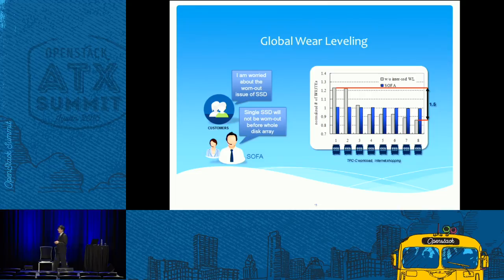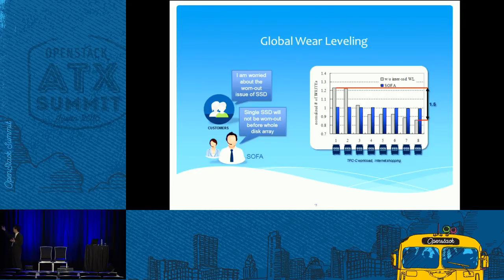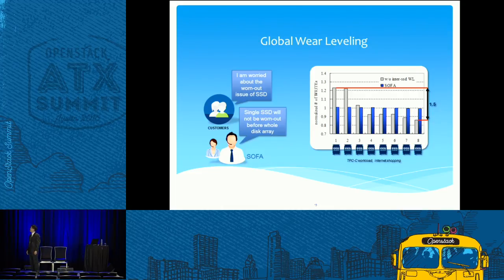Global wear leveling is a very important feature because over time flash disks wear at different levels. Over time, some of these wear a lot and some wear little, so eventually one of them gets corrupted or used up, then the whole system becomes useless. This feature is very important so you can get your system running longer.